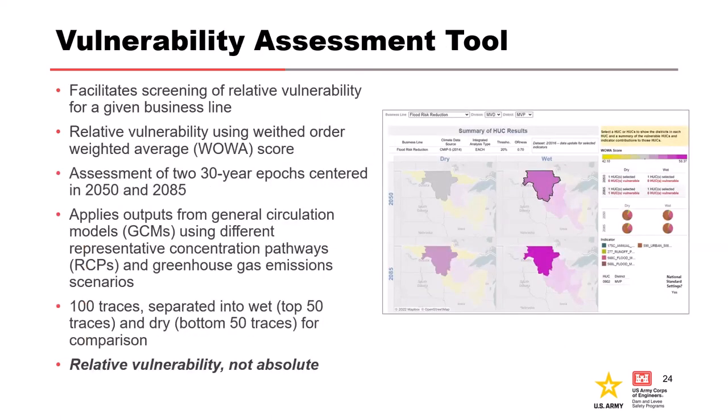The last is a Vulnerability Assessment Tool. For each four-digit HUC watershed in the United States, you can look at different business lines — the most common one is flood risk reduction. It ranks all the watersheds in the United States and flags the top 20 percent as being especially vulnerable to impacts of climate change. Some of the indicator variables are more runoff, more precipitation, and similar metrics. It's important to note that just because you're in the 21st percentile doesn't mean you're not vulnerable to climate change. This tool is only accessible to Corps employees.